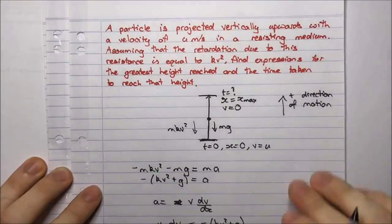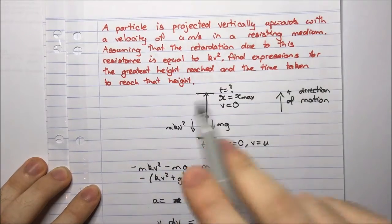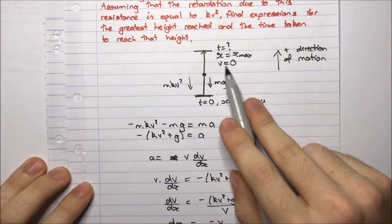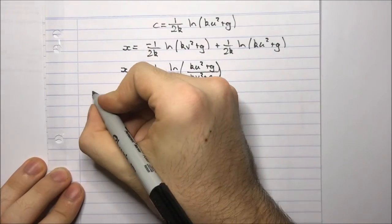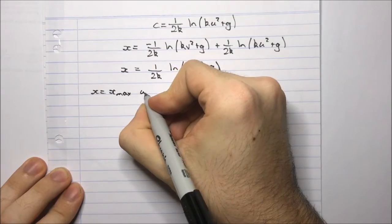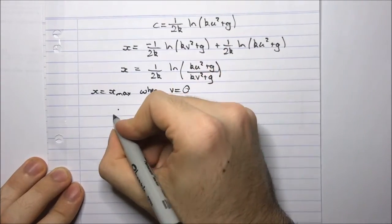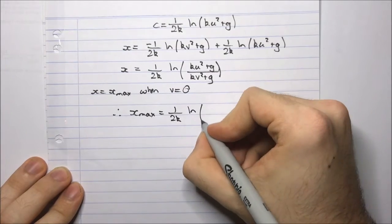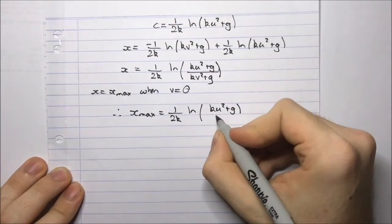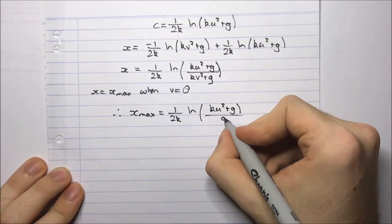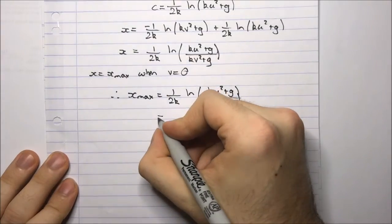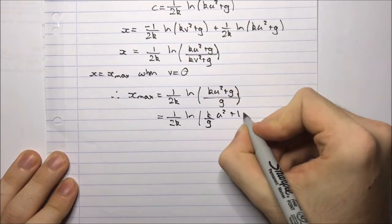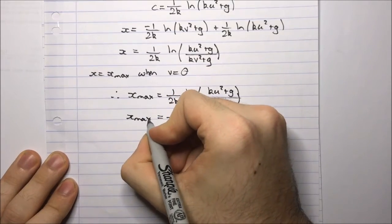The question asks for the greatest height reached. From the diagram, maximum height is reached when v equals 0. Substituting v equals 0: x max equals 1 over 2k times log of (ku² + g) over g. Factoring out g from the numerator gives x max equals 1 over 2k times log of (k over g times u² + 1). That is the expression for the maximum height reached.